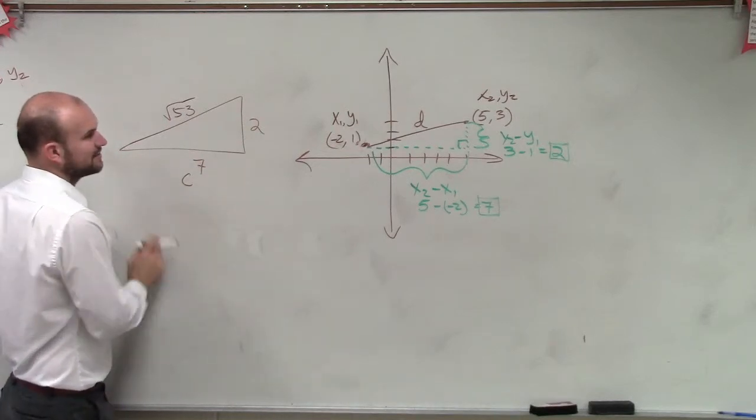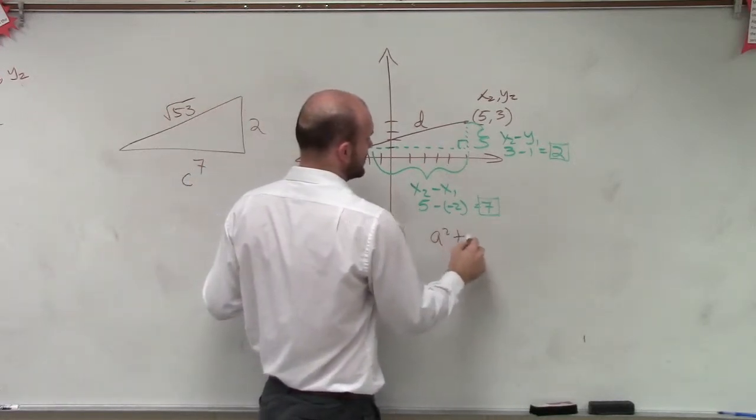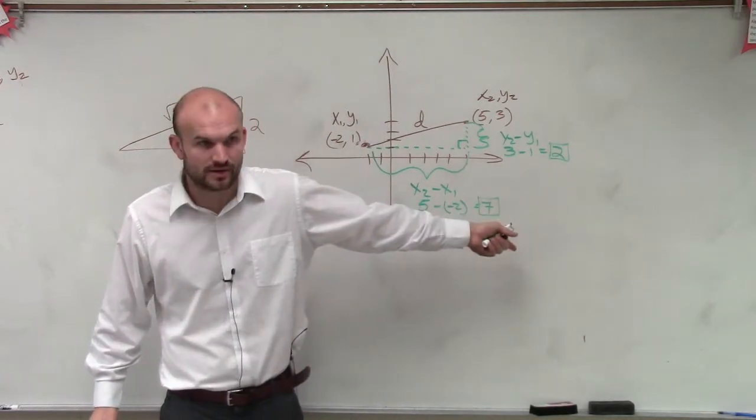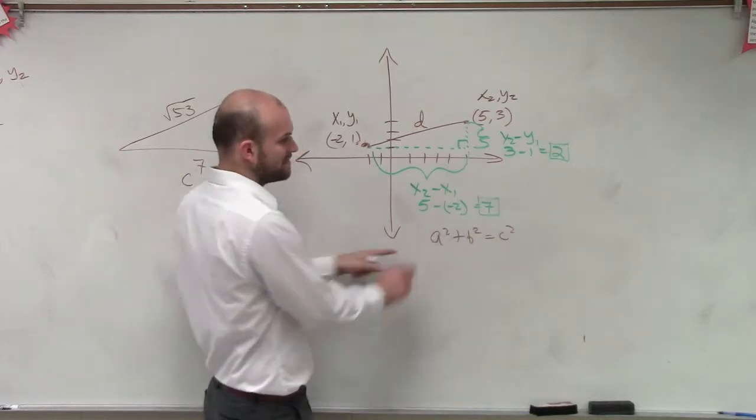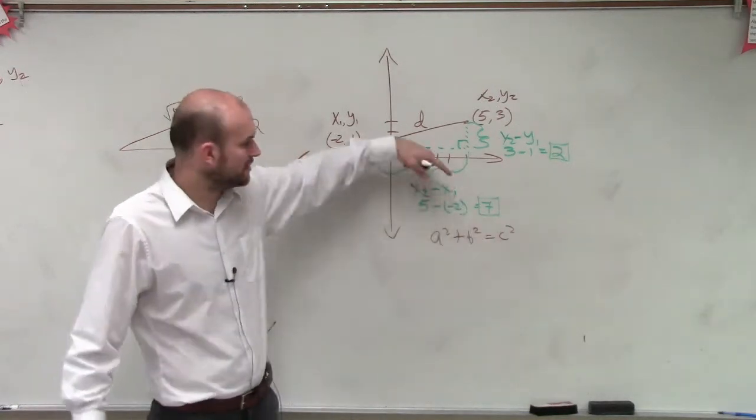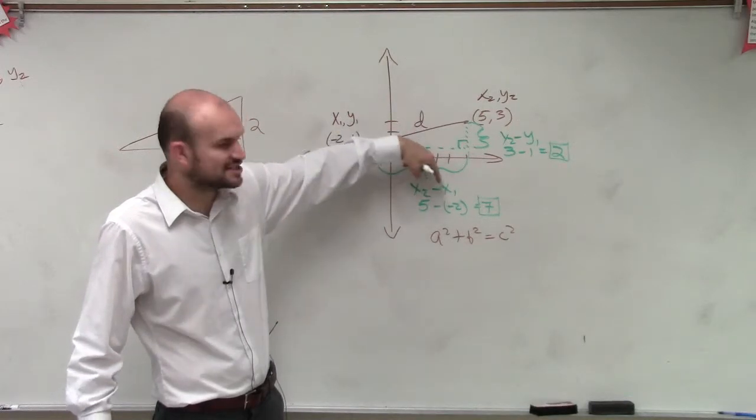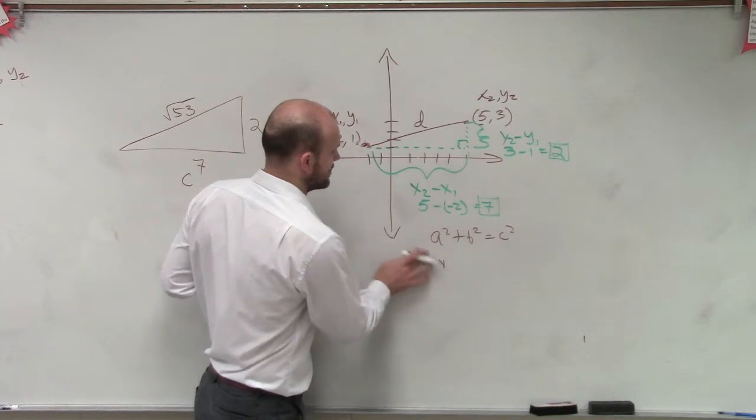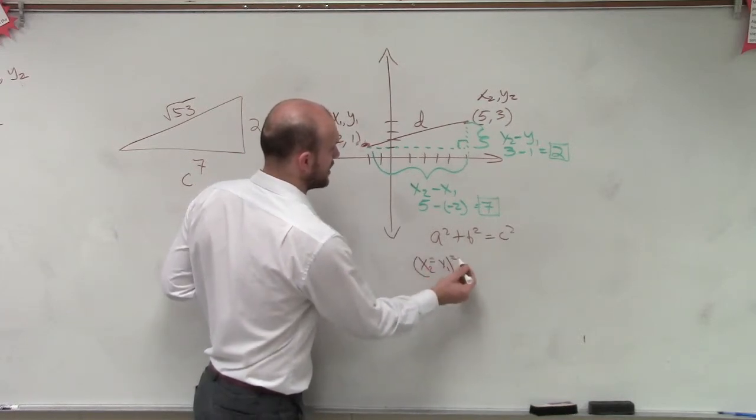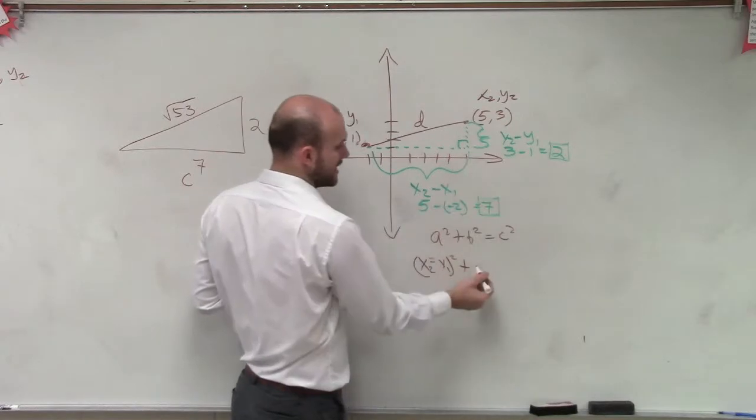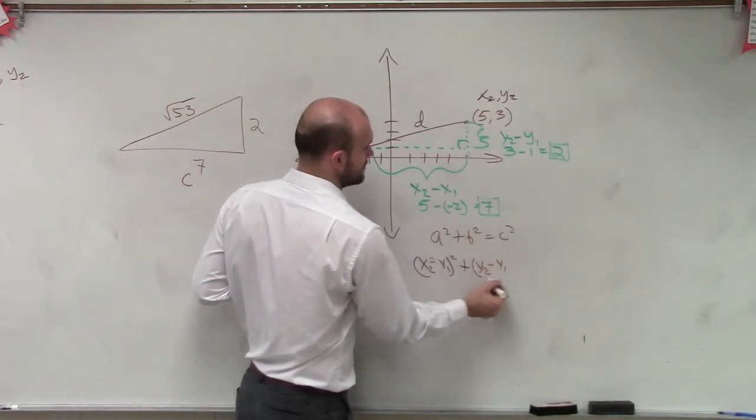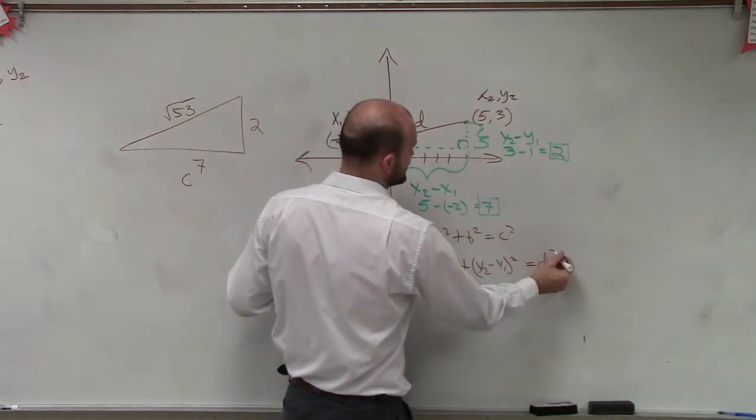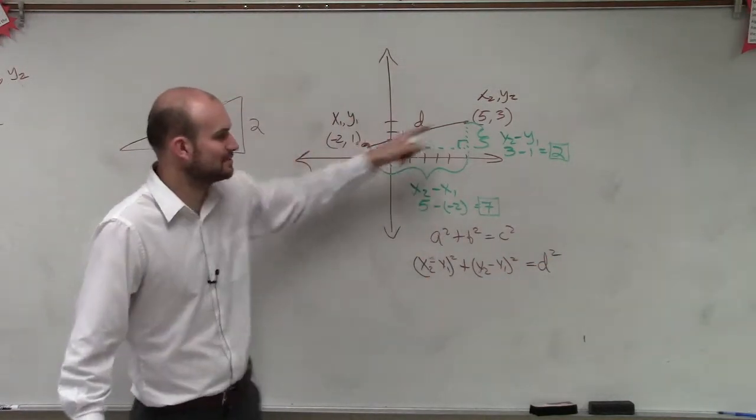Remember, Pythagorean theorem states that a squared plus b squared equals c squared. Or leg squared plus leg squared equals hypotenuse squared, right? So we look at, what's my one leg squared? Well, the one leg was 7, but how did we get that? We said x2 minus x1. So you could say x2 minus x1 squared plus the other leg, which was y2 minus y1 squared equals c squared, or what we're going to call our distance squared, because that's the distance between the two points.